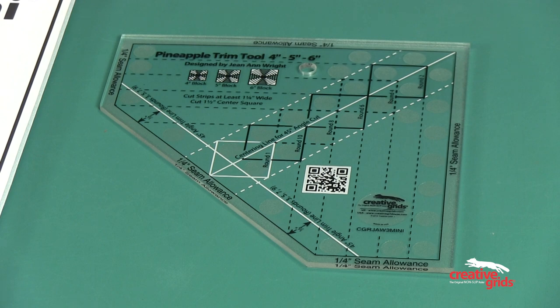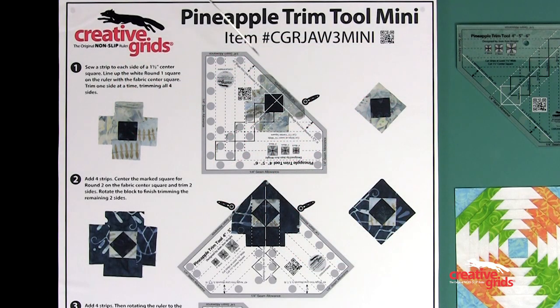To trim the first round, look for the white square labeled round one. Line up the square and, trimming one side at a time, trim all four sides.